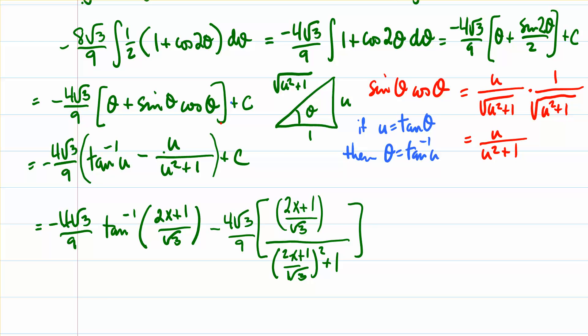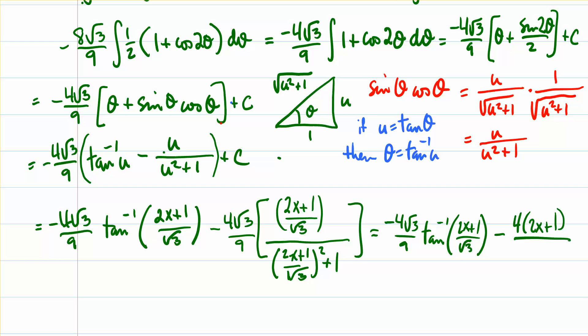I'm going to jump ahead without doing too much simplifying here. In the numerator I have 4 root 3, and in the denominator of the numerator I have a root 3, so I can simplify that. In the denominator I also have [(2x + 1)/√3]², which I can square out. Distributing the 9 all the way through gives 9 times [(2x+1)/√3]² = (2x+1)²·9/3, and simplifying gives 12x² + 12x + 3, then adding 9 gives 12x² + 12x + 12 in the denominator.